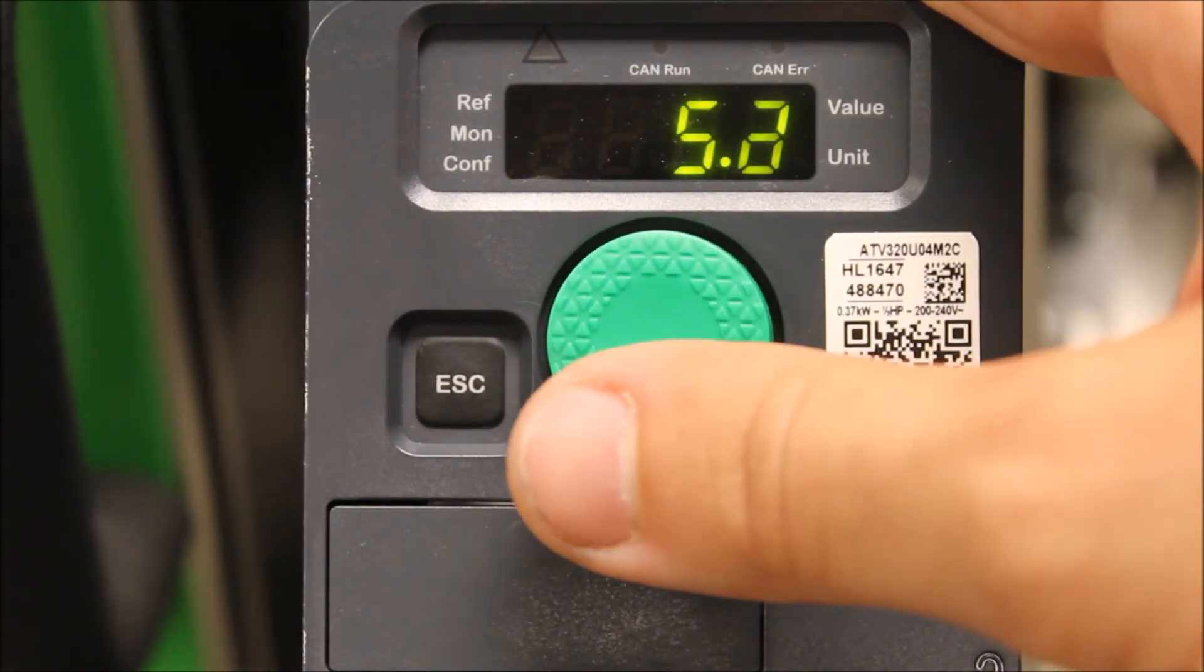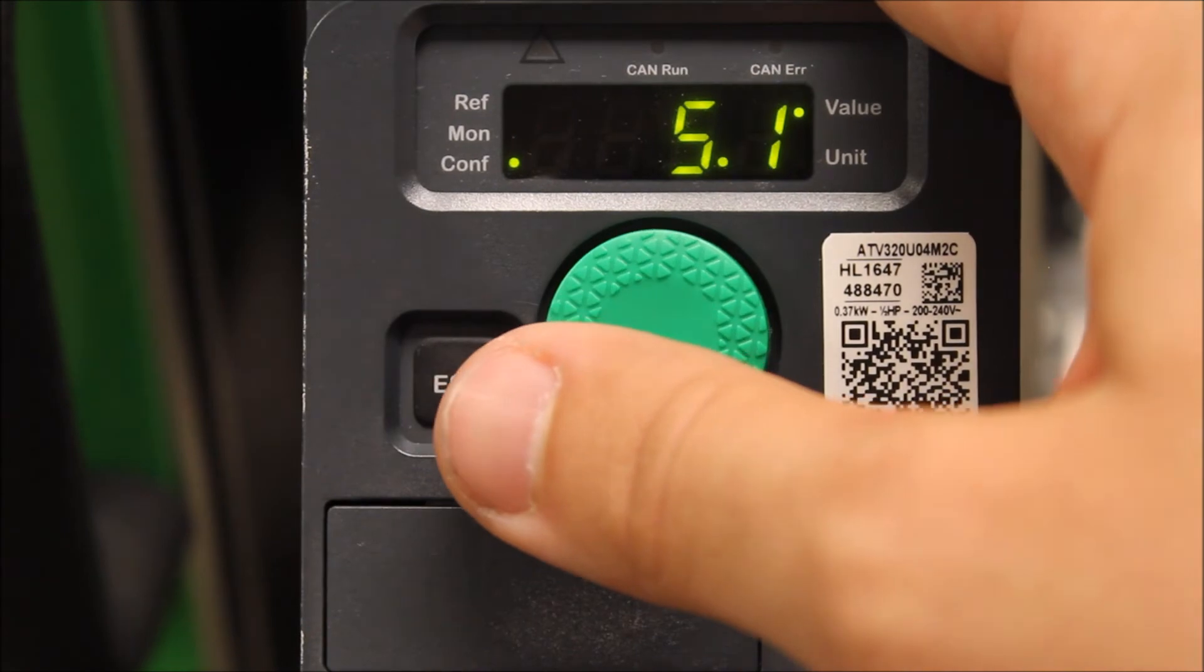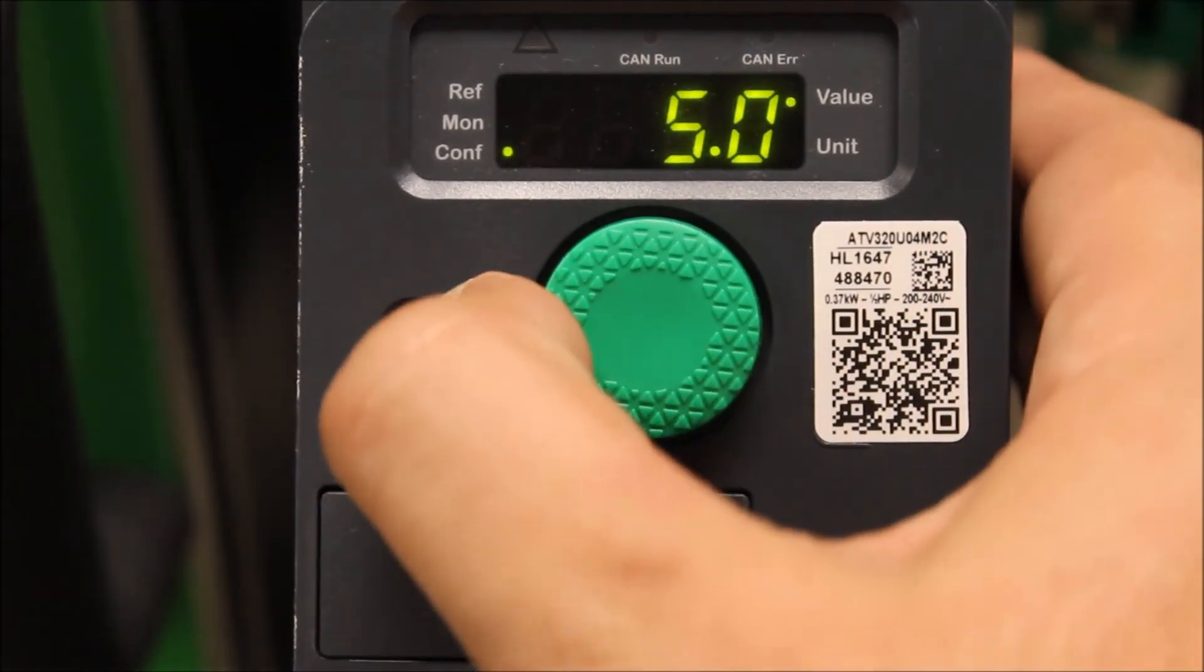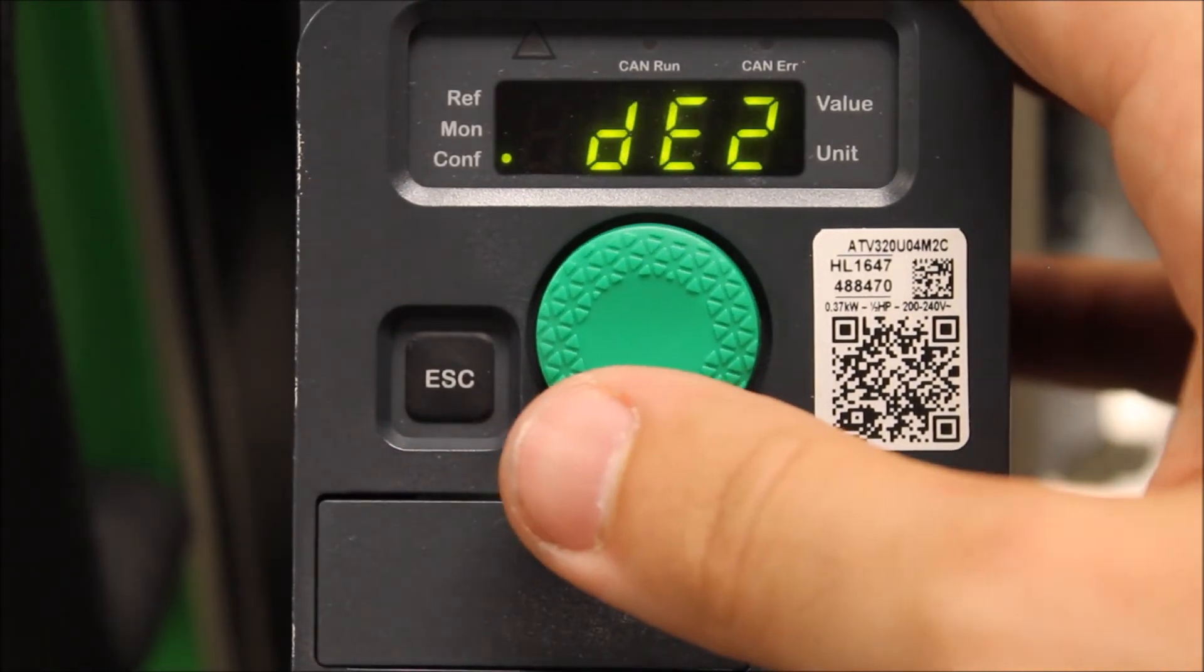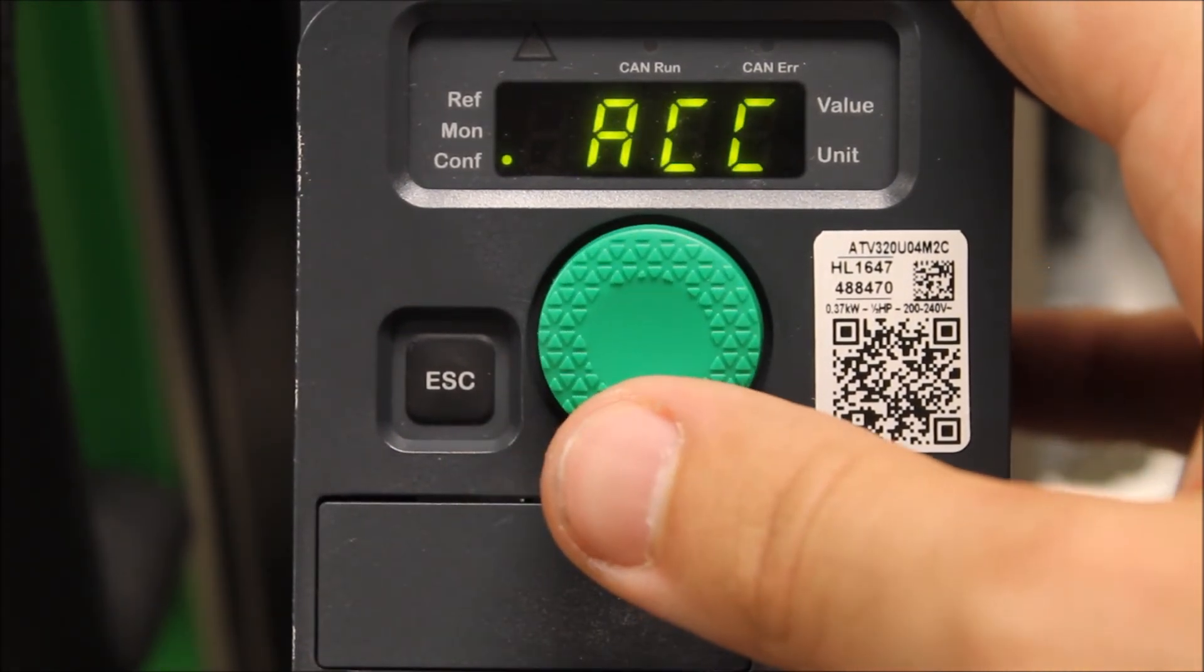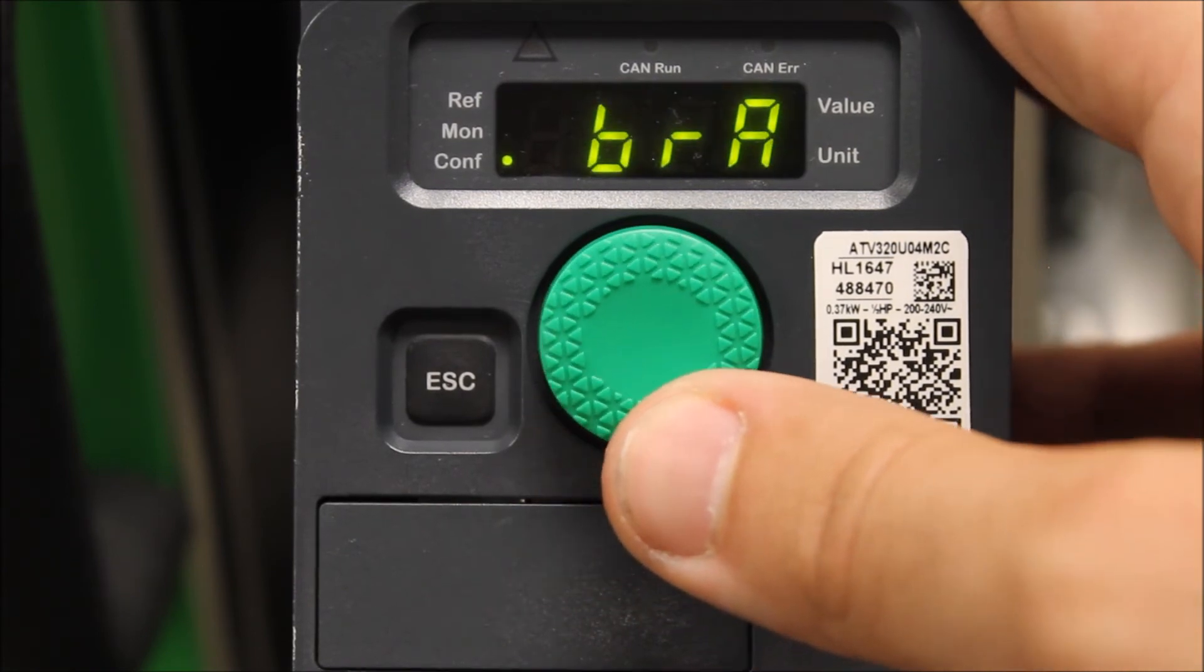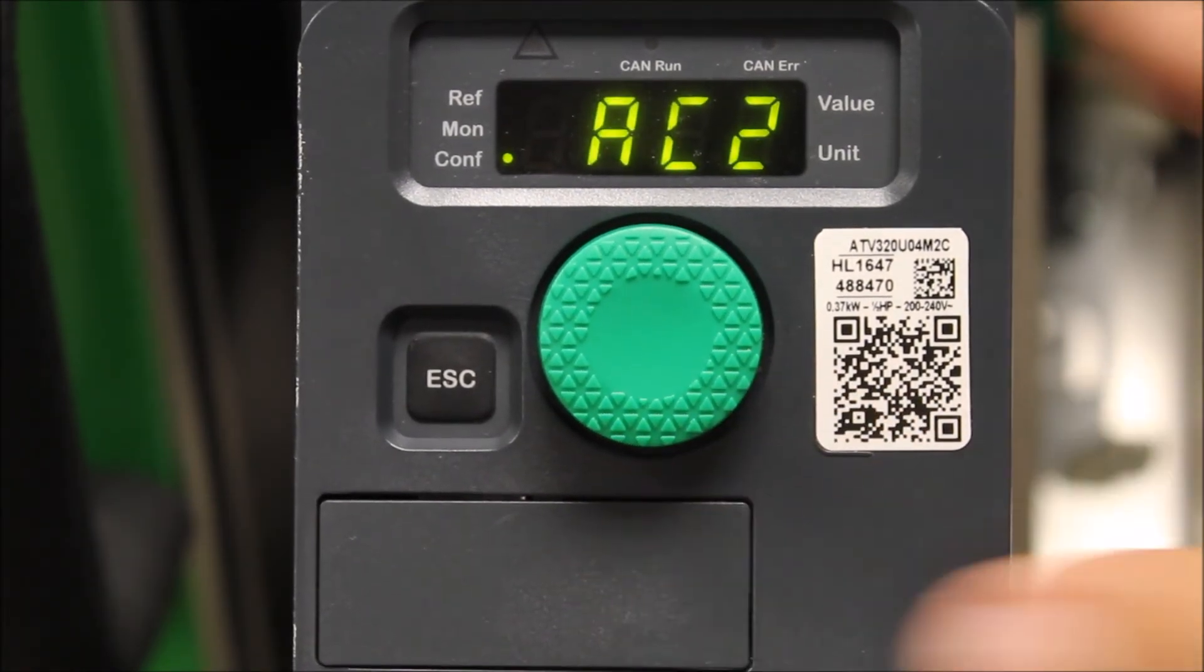That's basically how that works. The first accel and decel times are in this menu as well - right here, ACC and DEC - but you notice the secondary ones are labeled as DE2 and AC2.